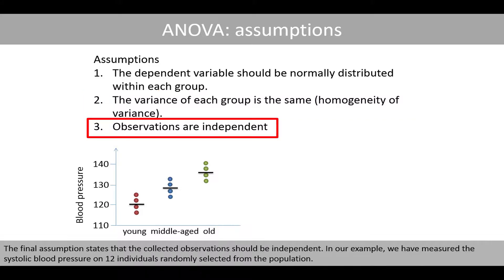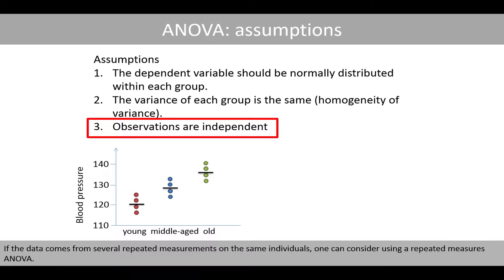The final assumption states that the collected observations should be independent. In our example, we have measured the systolic blood pressure of 12 individuals randomly selected from the population. If the data comes from several repeated measurements on the same individuals, one can consider using a repeated measures ANOVA.